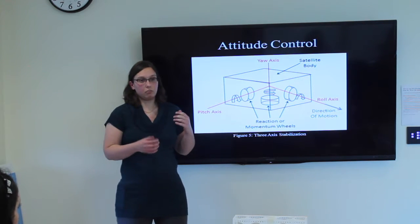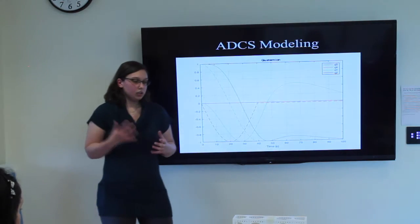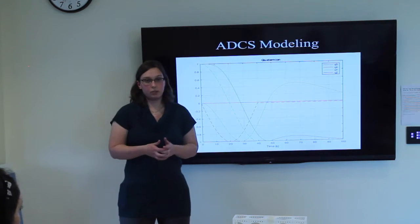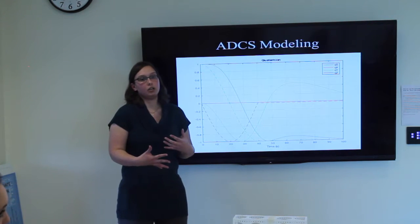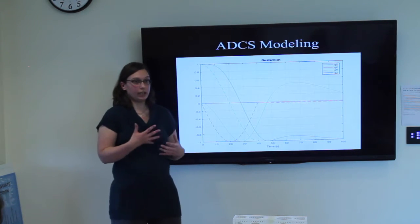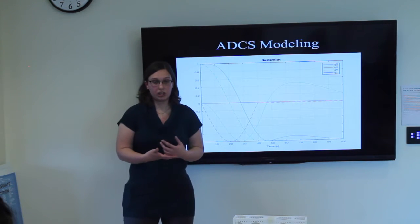The goal of this is to model attitude determination and control through several computer programs that kind of estimate how long does it take for the satellite to reorient itself. What surfaces do we have to worry about? Which ones are easier to control about? Which axes?